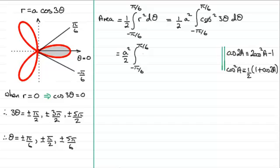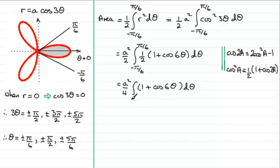In this example, if we're integrating cos squared 3 theta, a is 3 theta. So we've got 1 half of 1 plus cos 6 theta. If I bring out the half, we're going to have a squared over 4, and we're integrating 1 plus cos 6 theta with respect to theta. Again, we put those limits in minus pi upon 6 to pi upon 6.